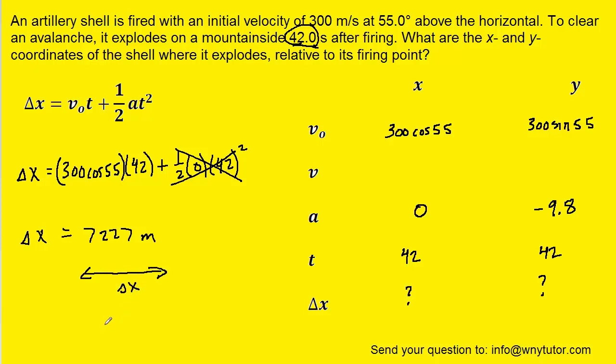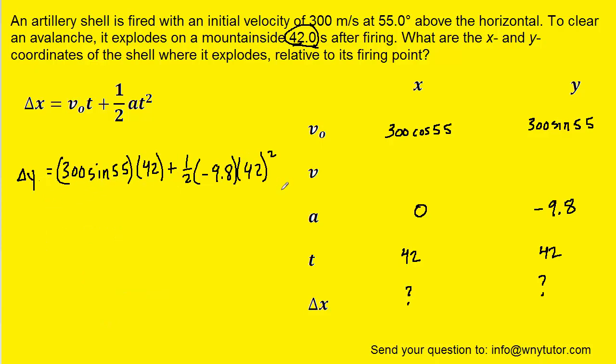We will now turn to the y direction displacement. We've plugged in all the known values from the y column of the chart. Notice that instead of calling it delta x, we're calling the displacement delta y, a minor change but worth noting. When you calculate that, you should get approximately 1,678 meters for the displacement in the y direction.